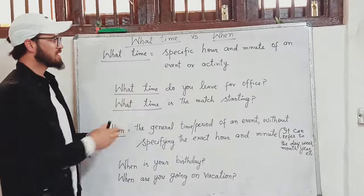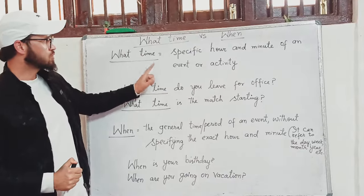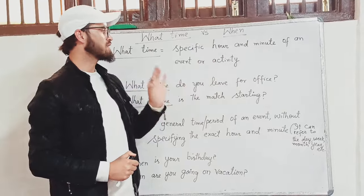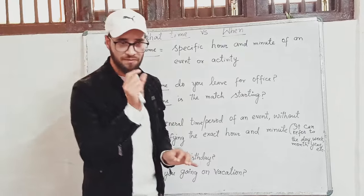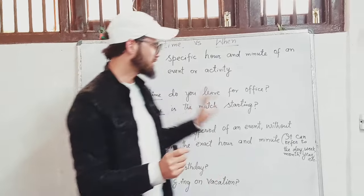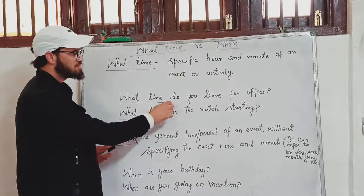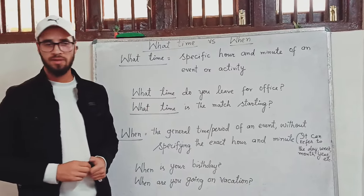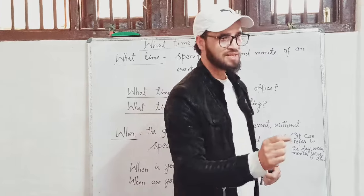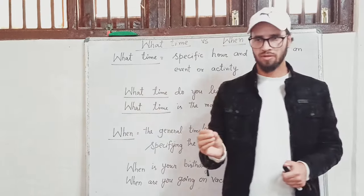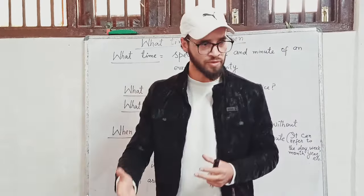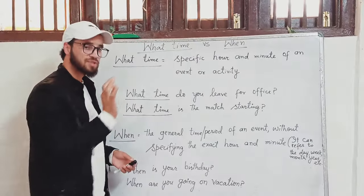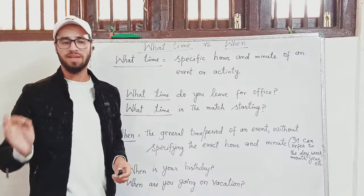'What time' is used to talk about or ask about the specific hour and minute of an event or activity. For example: What time do you leave for office? The answer has to be something like 10 o'clock or 9:30 in the morning. So 'what time' is asking about the specific hour and minute.